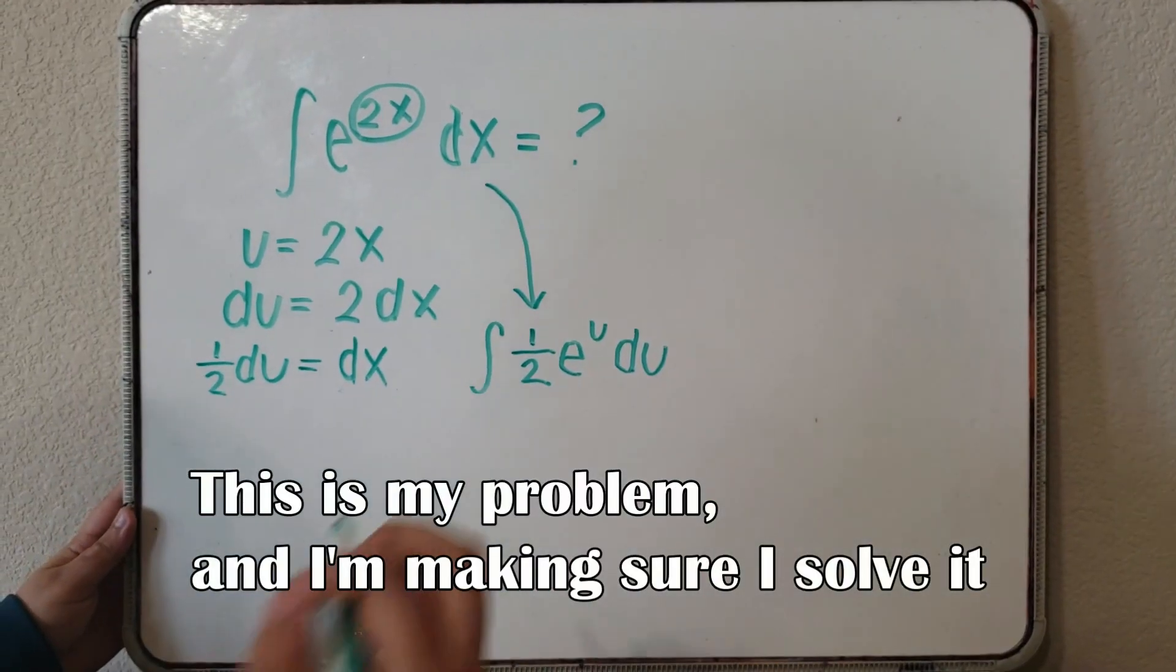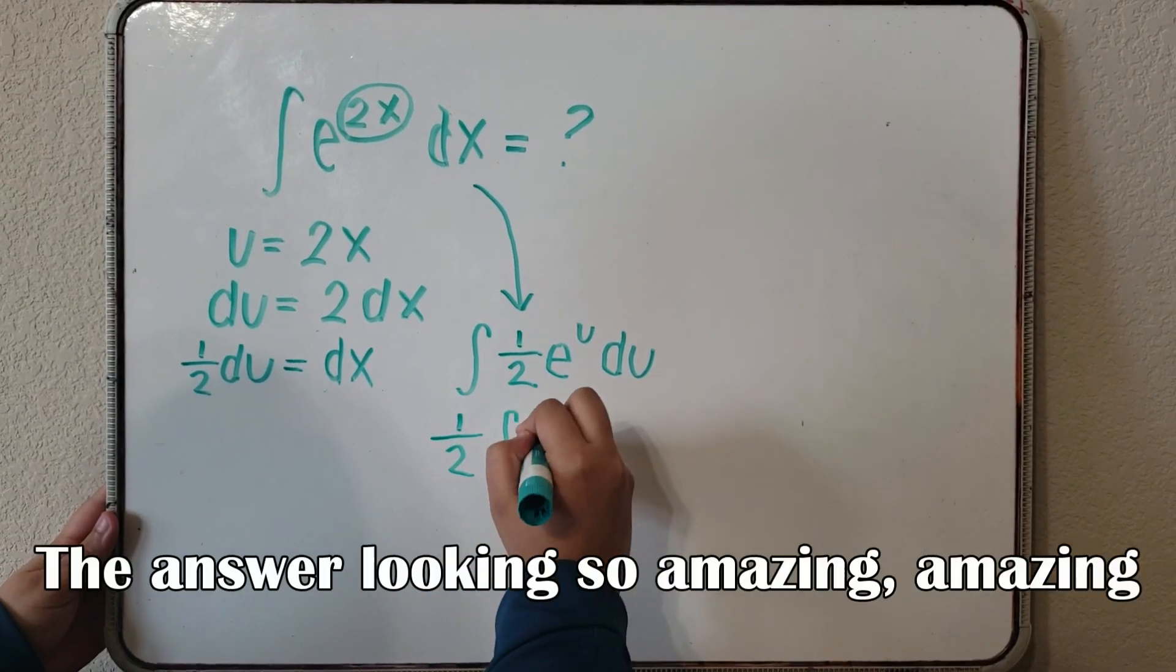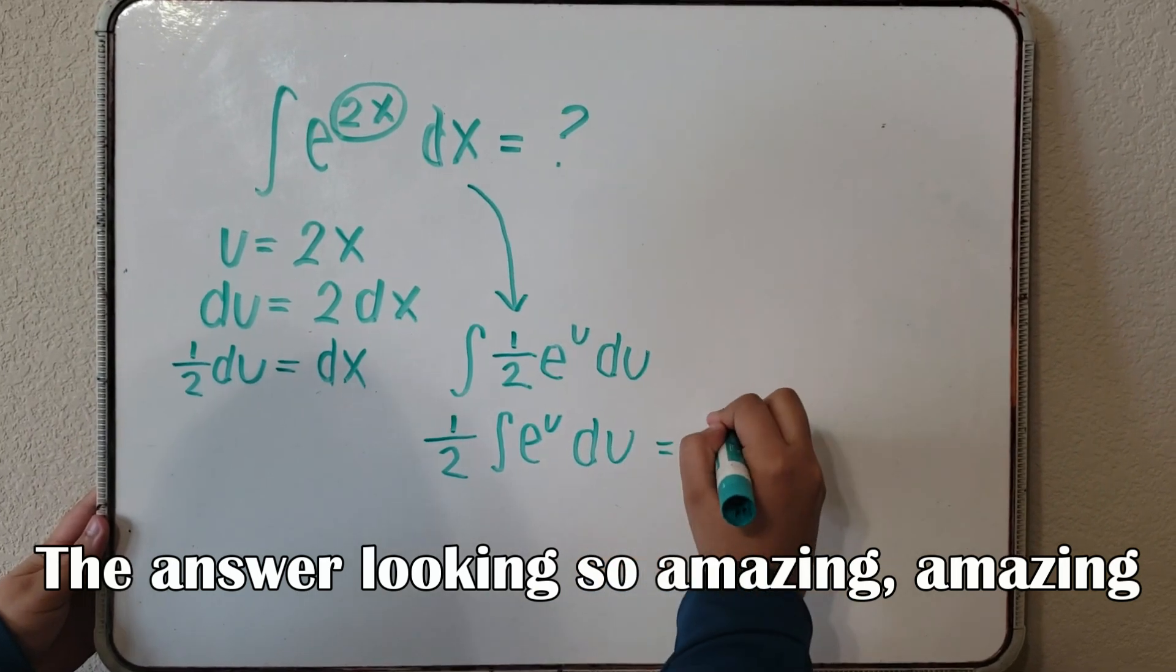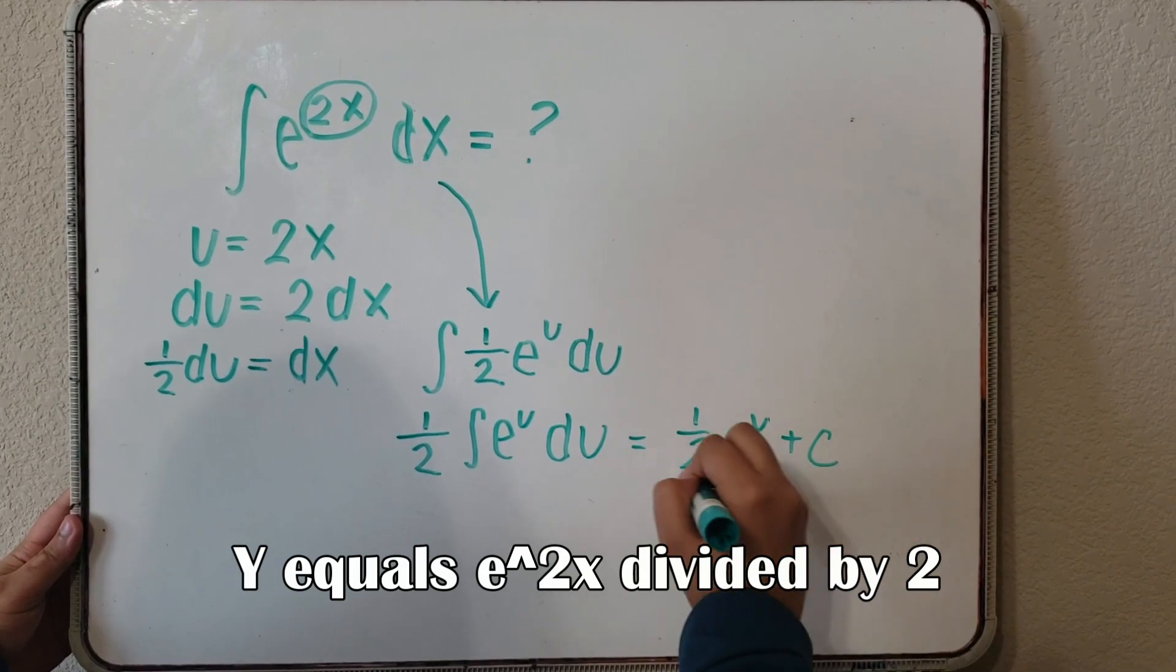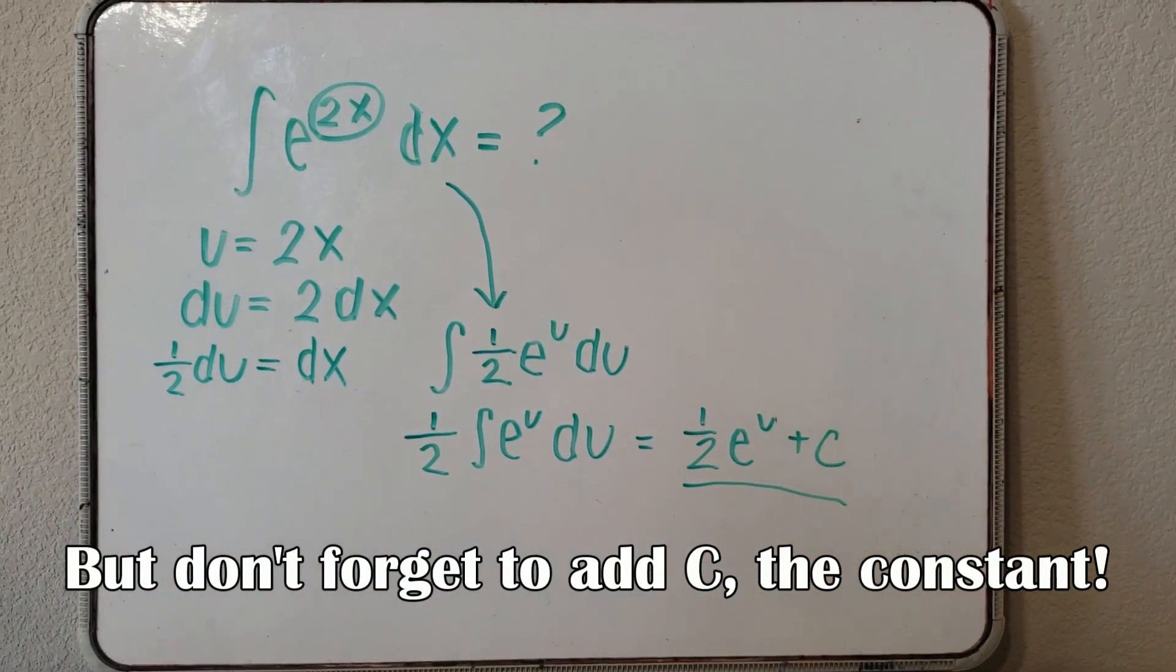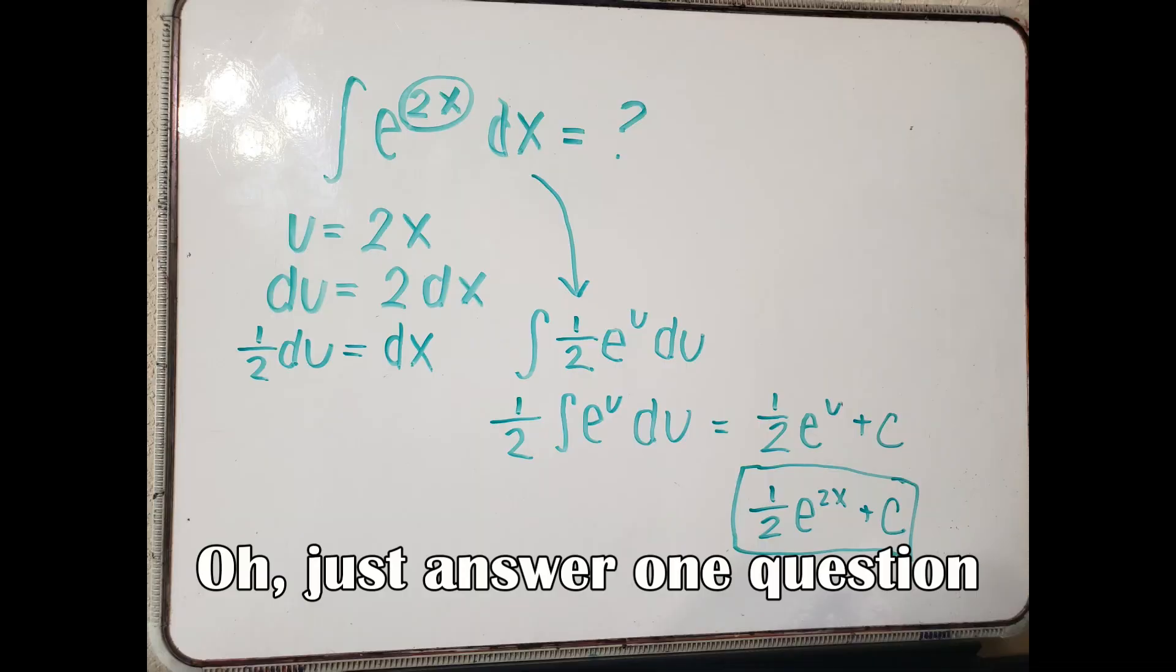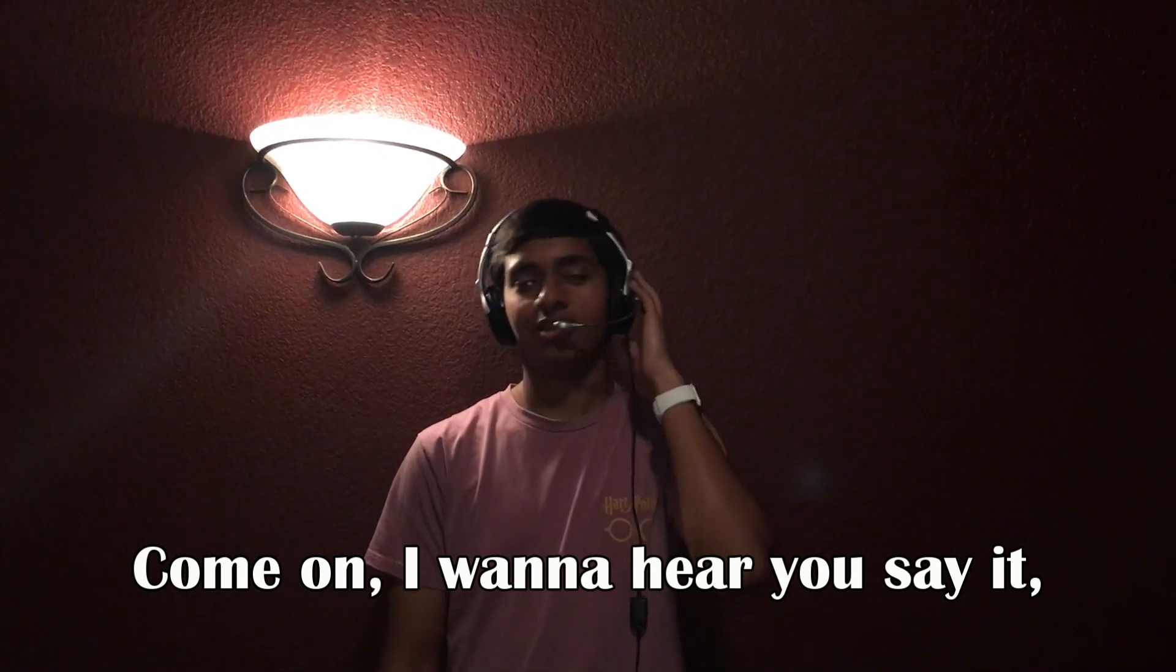This is my problem and I'm making sure I solve it. Answer looking so amazing. Y equals e to 2x divided by 2. Don't forget to add the constant.